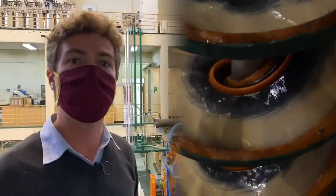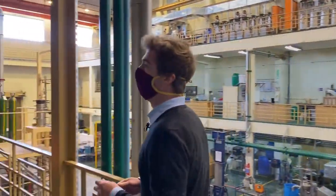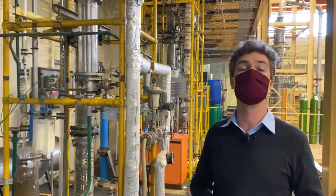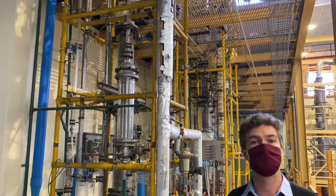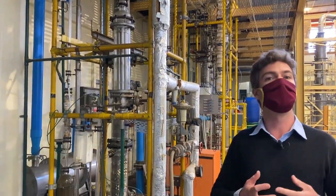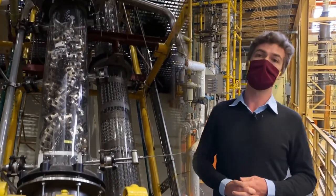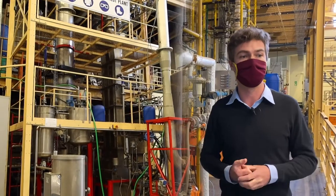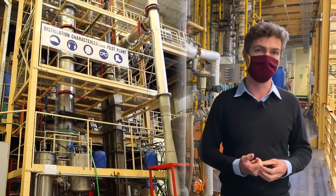On this side we have very large distillation columns and separation columns where we can demonstrate the principles of separation processes - how to, for instance, separate out crude oil into petrol, diesel, and kerosene, or to do other things like absorb carbon dioxide from power stations for carbon dioxide sequestration to prevent global warming.